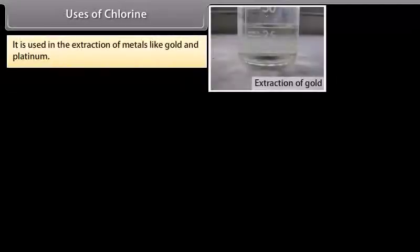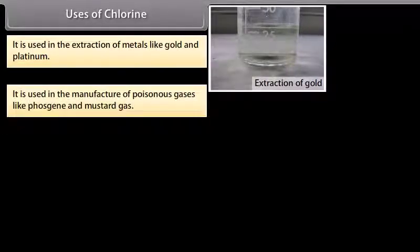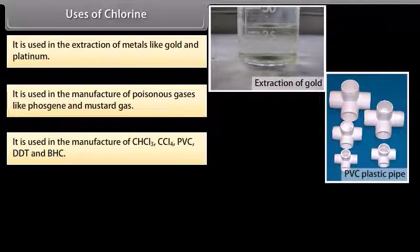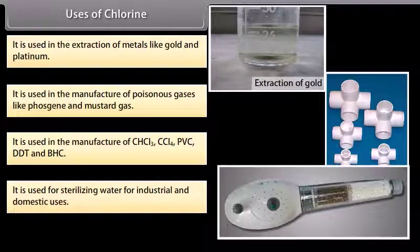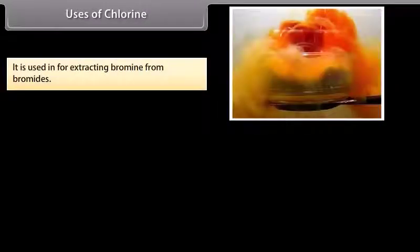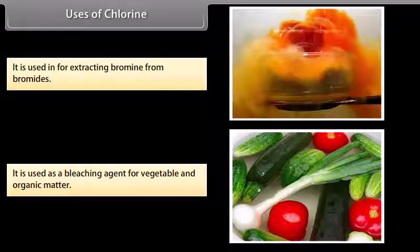Uses of chlorine: It is used in the extraction of metals like gold and platinum. It is used in the manufacture of poisonous gases like phosgene and mustard gas. It is used in the manufacture of CHCl₃, CCl₄, PVC, DDT and BHC. It is used for sterilizing water for industrial and domestic uses. It is used for extracting bromine from bromides, and as a bleaching agent for vegetable and organic matter.